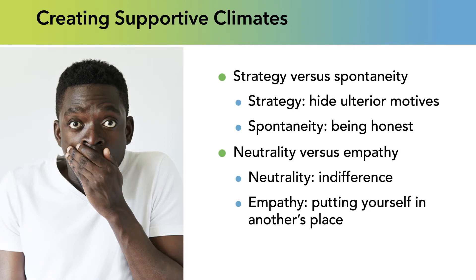The third pair is strategy versus spontaneity. Strategy is really manipulation, while spontaneity is being honest. For example, a friend once asked me 'Do you like tulips?' I said I loved them, and she said, 'Good, come over and help me divide them and I'll give you some.' Spontaneity would have been simply asking directly: 'I have a lot of tulips — would you come help me divide them?'